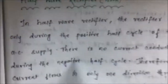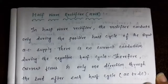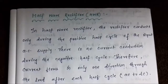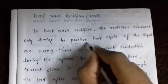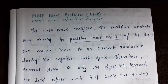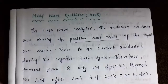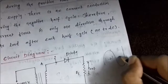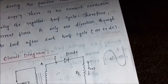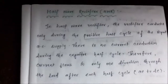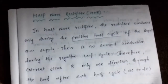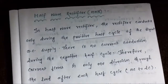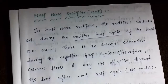The half wave rectifier, as the name implies, works only during the positive half cycle of the input AC signal waveform. As we know, a full signal waveform consists of two half cycles — a positive half cycle and a negative half cycle. The half wave rectifier only works during the positive half cycle, which is half of the duration of the complete waveform, hence the name. This means there is no current conduction during the negative half cycle, and conduction occurs only during the positive half cycle.